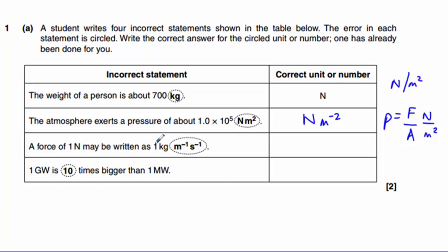The next one, a force of 1 newton may be written as 1 kilogram meters to the minus 1 seconds to the minus 1. Well, again, if we start by writing out our formula here, force equals mass times acceleration.